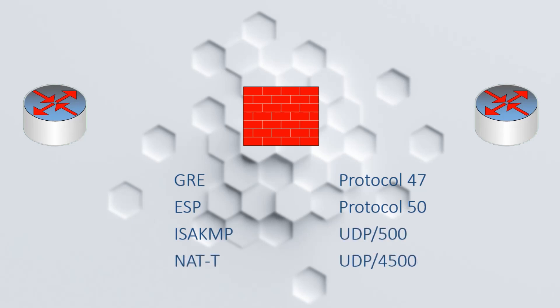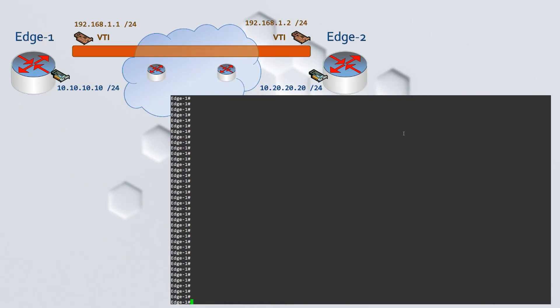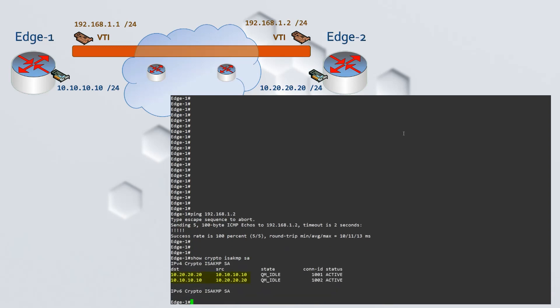I'm going to briefly show how to verify IPsec is working using a real CLI. We can already see that the tunnel is up. Start by checking the phase 1 SAs with the command 'show crypto isakmp sa'. There is an SA to describe each end of the tunnel — that's what the source and destination fields are all about. The other important field is the state. QM Idle is a good state, as it means the phase 1 tunnel is up and working.